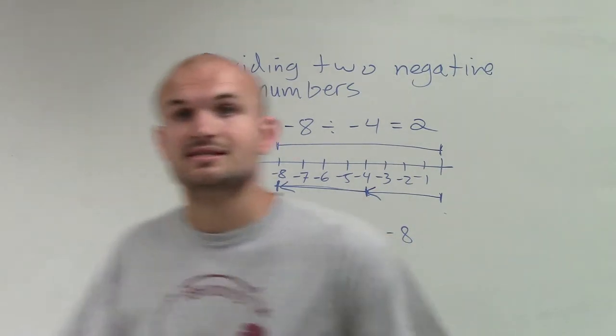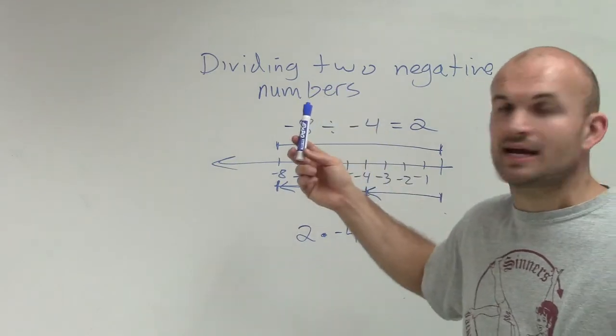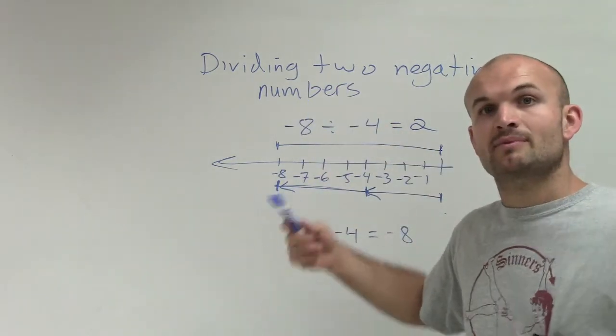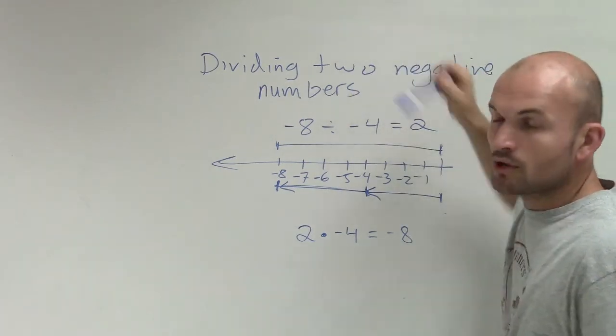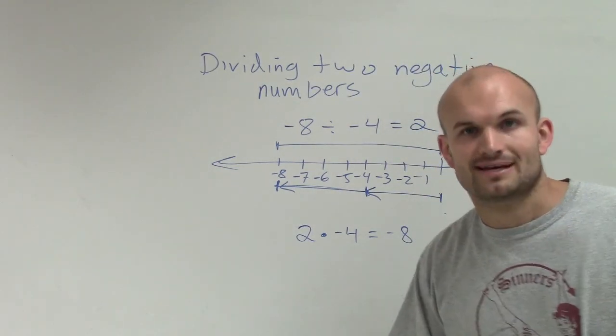So you can see the similarity with multiplying two negative numbers. When we multiply two negative numbers, we always get a positive. Well, when we divide two negative numbers, we're also always going to have a positive quotient. Thanks.